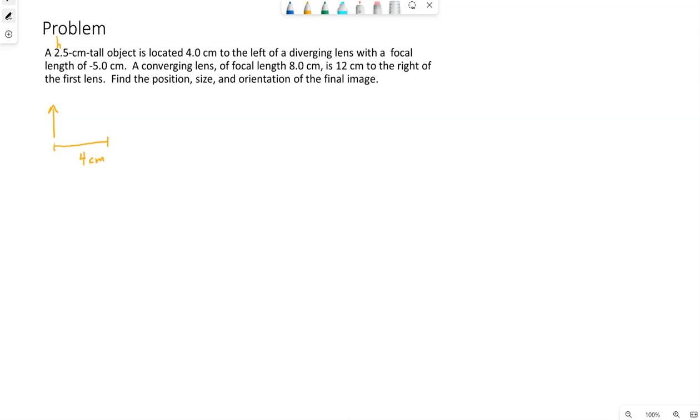So 4 centimeters to the left of a diverging lens that has a focal length of negative 5 centimeters. A converging lens that has a focal length of 8 centimeters is located 12 centimeters to the right of the first lens. We want the position, size, and orientation of the final image.